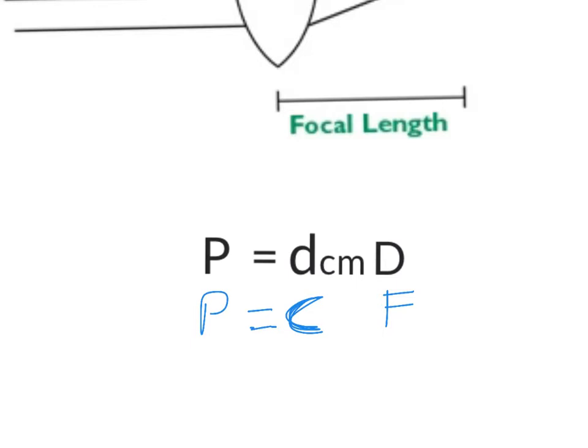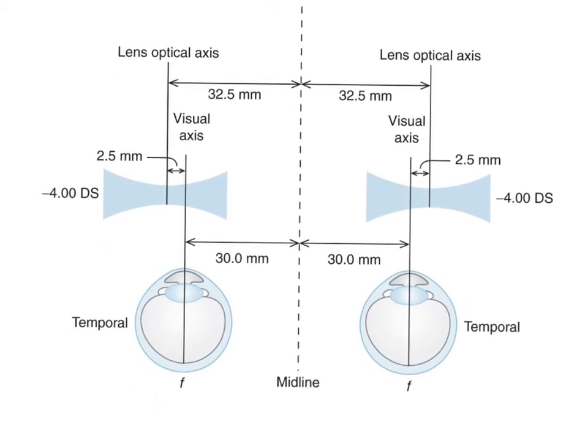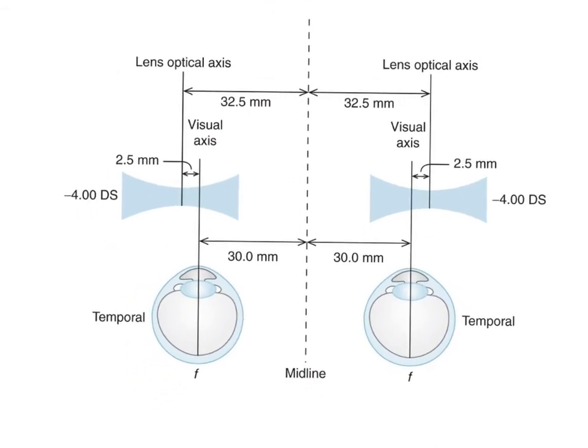So let's do an example using Prentice's Rule. I have here a picture. This patient is wearing an eyeglass prescription of minus four in both eyes, minus four here and minus four here.